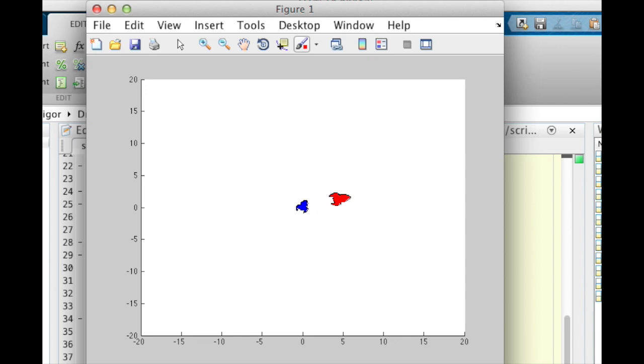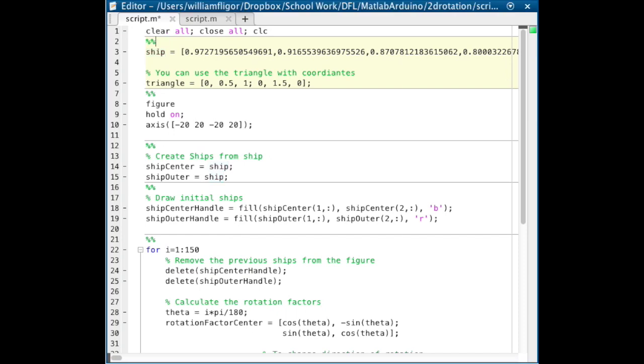This is the animation that we will be creating. First, we set the x and y coordinates for the ship. As the ship is very complex, it is easier for watchers to use these coordinates that draw a triangle. Next, create the figure and set the hold to on, and then set up the axes.